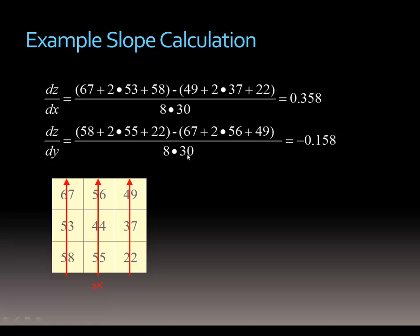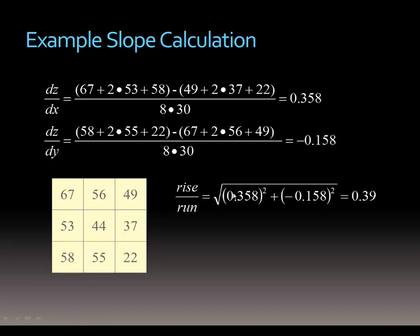With our cell size — assuming a 30 meter cell size — we get a ratio of minus 1.58. Then we take those two values, square them, add them together, and take the square root, winding up with 0.39. We use the arctangent of that, which is 21 degrees. So the tangent of 21 degrees is 0.39 and our slope at this cell is 21 degrees.